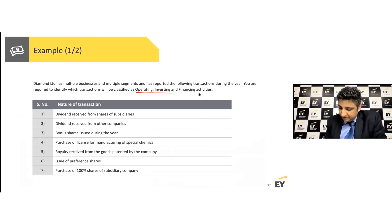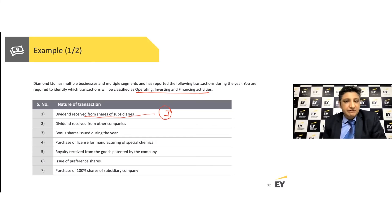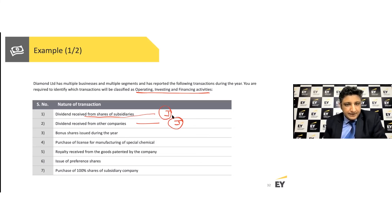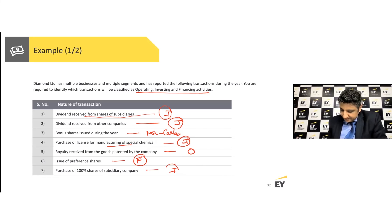Now let's classify transactions under three heads. Diamond Limited has multiple businesses and segments. You are required to identify whether each transaction is operating, investing, or financing. Dividend received from shares of subsidiaries — you made an investment in a subsidiary and received a dividend back — that is an investing activity. Likewise, dividends received from investments in other companies are also investing. Bonus shares issued is a non-cash item.